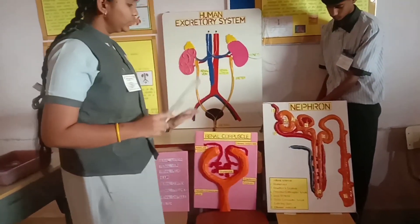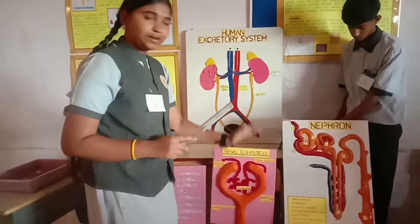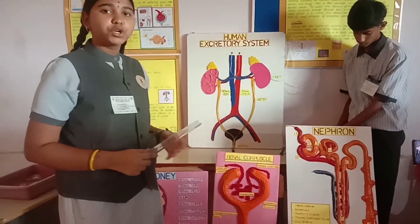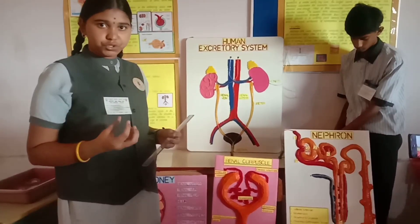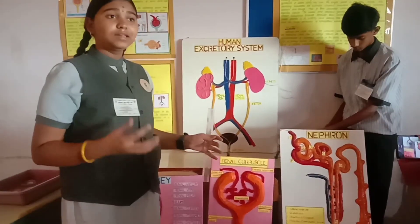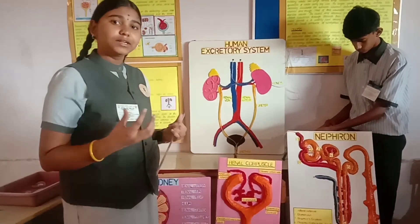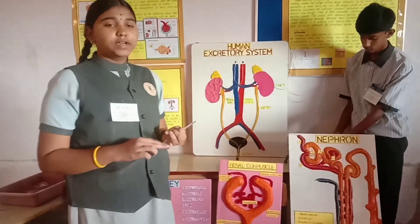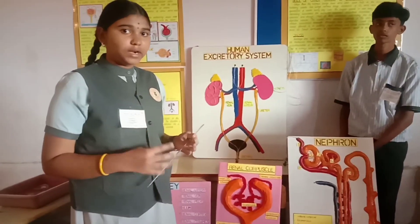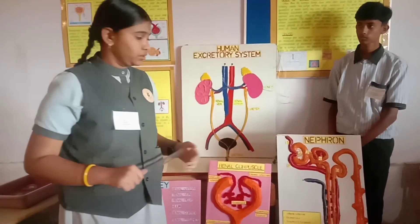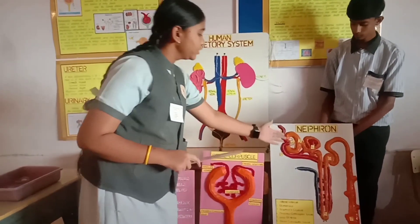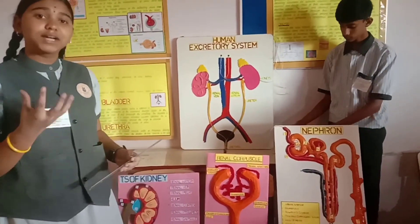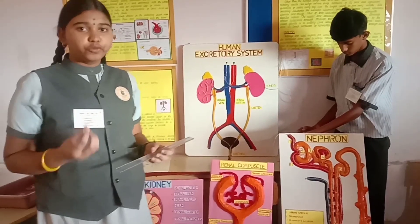The filtrate moves into the proximal convoluted tubule, which helps in the reabsorption of very necessary constituents. Nearly 99% of the constituents get reabsorbed here. The materials reabsorbed include water, glucose, amino acids, etc., by active or passive transport. Once reabsorption takes place, the fluid moves into the loop of Henle where water is conserved based on the requirement of the human body.